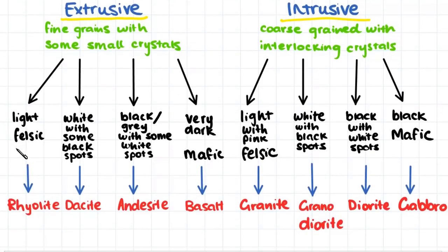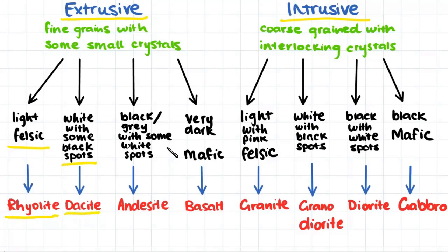If an extrusive rock is quite light in color, we would call it a felsic rock and therefore it is probably a rhyolite. If this extrusive rock is white with only some black spots, we would call it dacite. If we have a rock that is black or gray in color with only some white spots, it would be andesite, and a very dark rock would be called mafic and therefore a basalt.